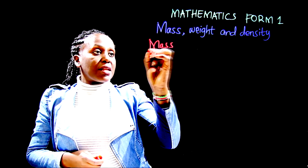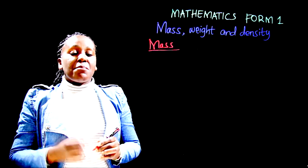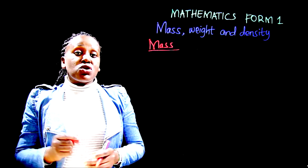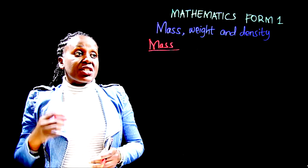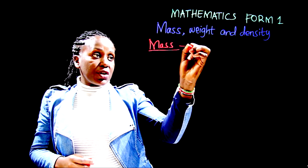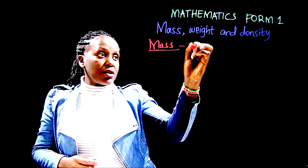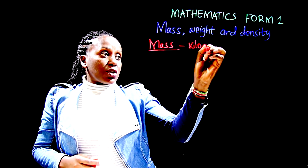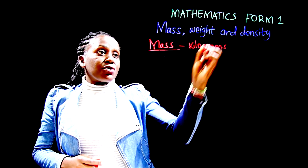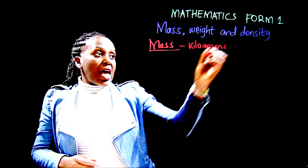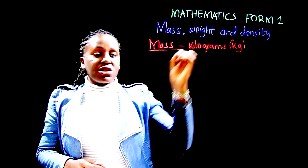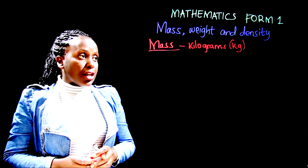Mass can be measured and the most commonly used unit of measuring mass is kilograms. Kilograms is the SI unit of mass and it is denoted by small k and small g.